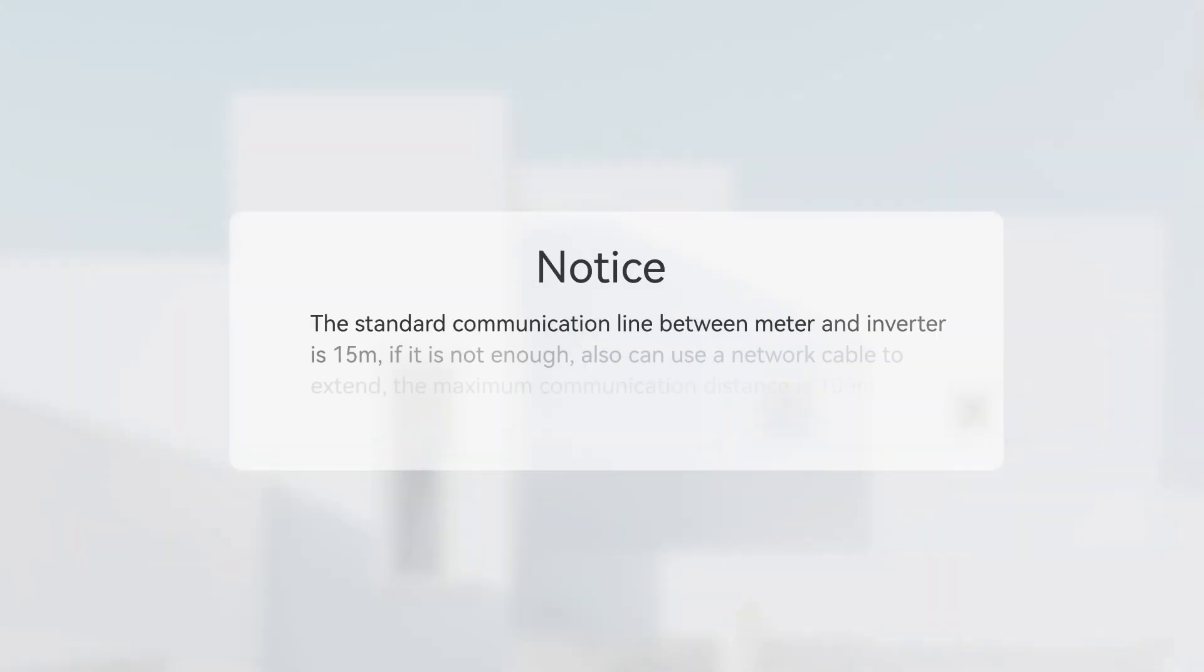The standard communication line between meter and inverter is 15 meters. If it is not enough, you can use a network cable to extend it. The maximum communication distance is 100 meters.